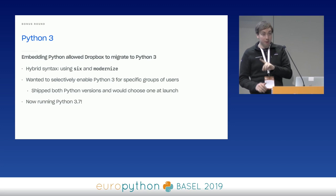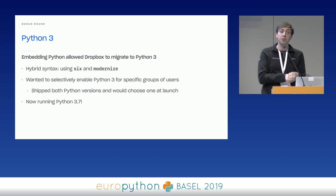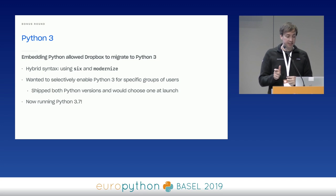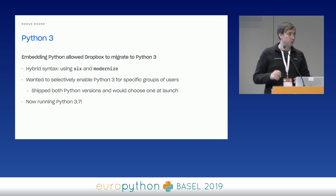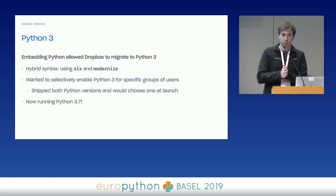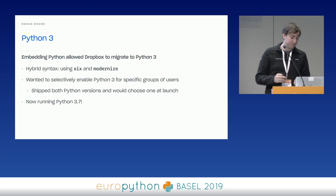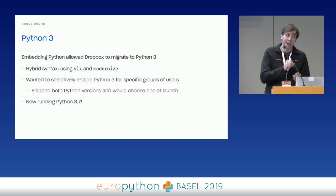We were initially a Python 2.5, then 2.7 app for the longest time. The move to embedding rather than freezing is what helped us migrate to Python 3. We eventually moved to a hybrid syntax supporting both Python 2 and 3, and would selectively choose whether to run in Python 3 or Python 2 at runtime. Because we control the Python C API, you can link against both Python 2 and 3 — so for a time we actually shipped both in our app and gradually migrated people over one by one. We're now running Python 3.7 and we're very happy.